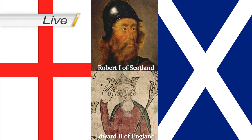Edward is reported as saying in surprise 'They pray for mercy,' as one of his attendants replied: 'For mercy, yes, but from God, not you — these men will conquer or die.' On the English side, the Earl of Gloucester and the Earl of Hereford are arguing over who should lead the vanguard. Gloucester tried to persuade the king to postpone the battle entirely. Edward II accused them of cowardice, and goaded by the accusation, Gloucester advanced to meet the Scots — few English soldiers accompanied him, and the Scots made light work of him. The English are gradually being pushed back and ground down by the Scots' schiltrons. English longbowmen attempting to support the advance of the knights are shooting their own men and have been ordered to stop.